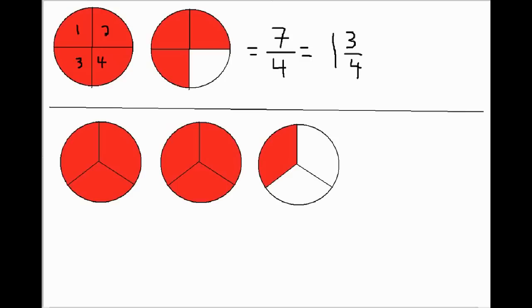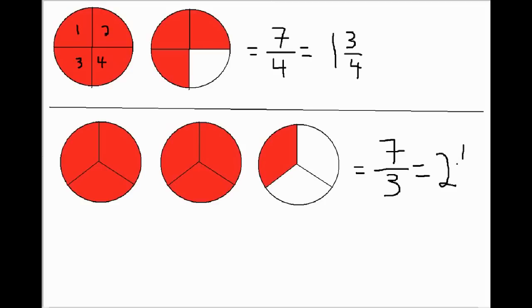Looking at our next example, we want to write that as a fraction. We look at how many pieces each whole is broken into — in this case, each whole is broken into 3 equal pieces. In the numerator goes the total number of pieces we have, which is 7. So this represented as a fraction is 7 over 3. Thinking about it in terms of pizza, we know we have two wholes, and then on the last one we have 1 out of 3 as a fraction. So these two values are equivalent — they're just two ways to write the same thing.